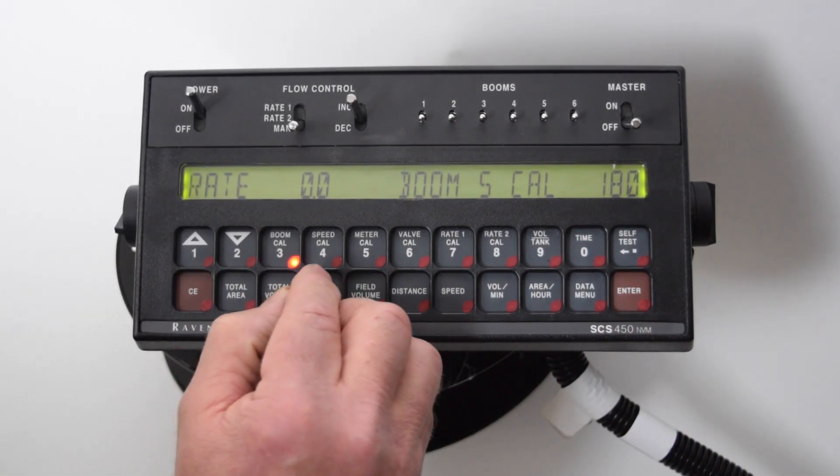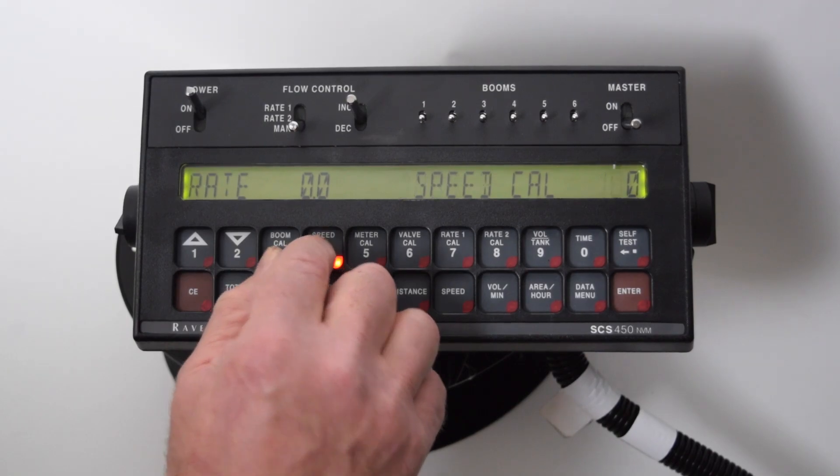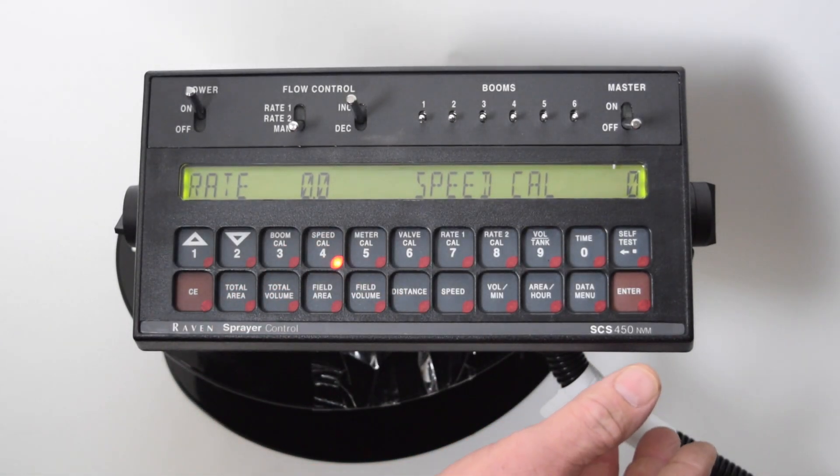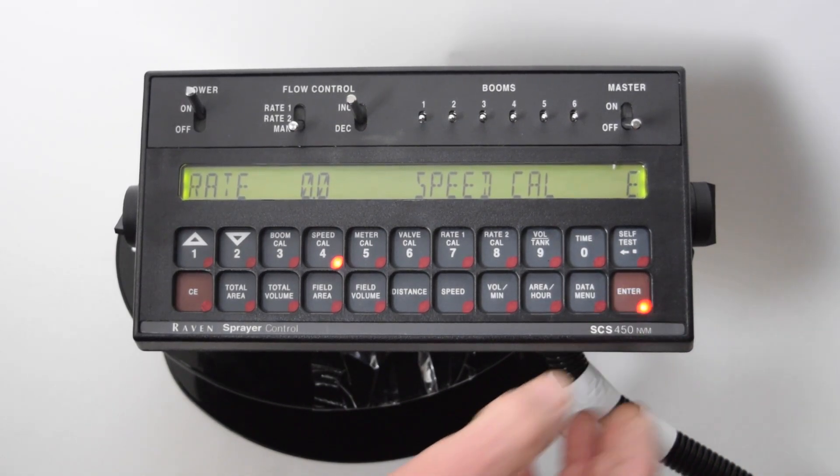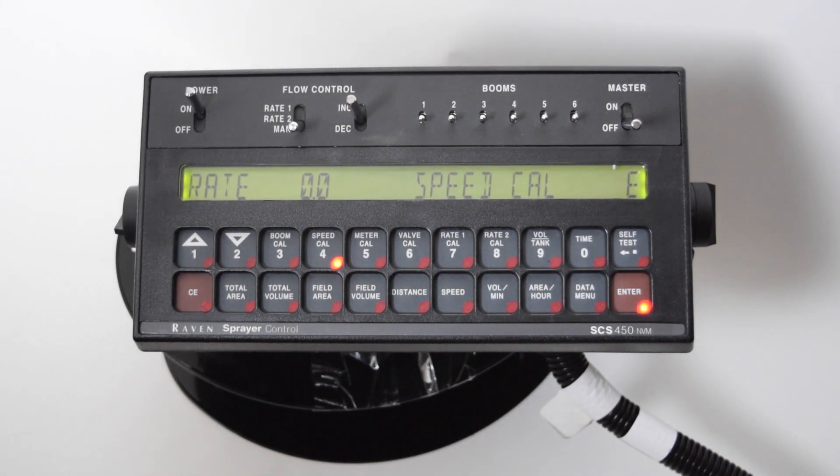Next we will go to button number four, that's our speed calibration. And for 38 inch rubber, we recommend a number of 950.